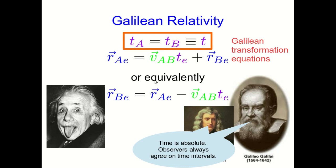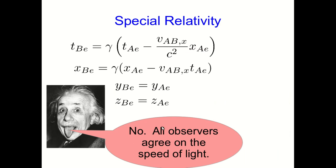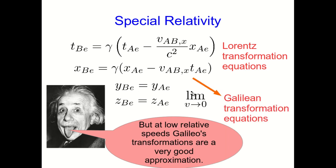And what replaces that in Einstein's special relativity is that all observers agree on the speed of light. That ends up leading to a very different set of transformation equations that we call the Lorentz transformation equations, which is more consistent with experiment. But the good news is that for observers at low relative speeds, so in the limit as v goes to zero, these reduce to the Galilean transformation equations.